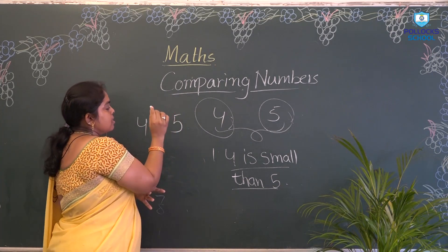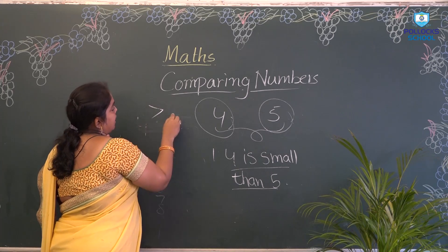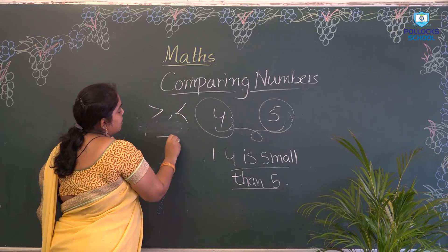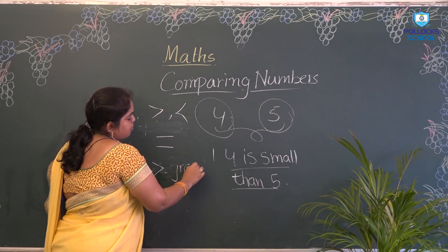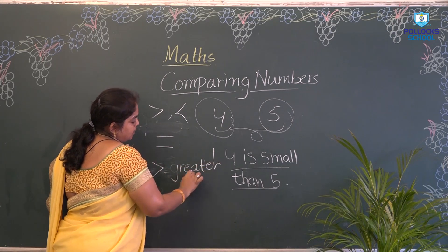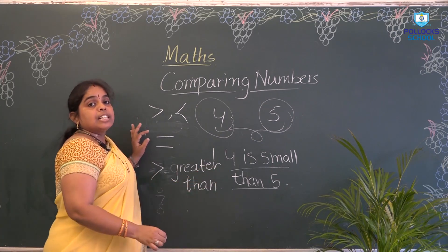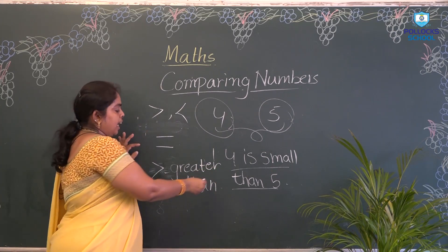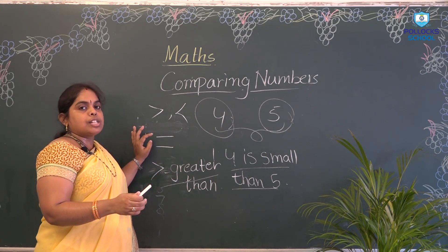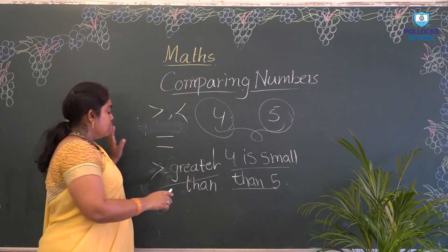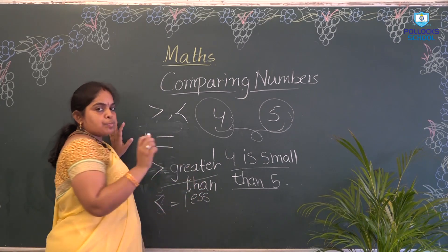To avoid writing sentences, we have symbols. What are those symbols? Greater than, less than, and equal to. This symbol is greater than. Greater means big. And less than — less means small.